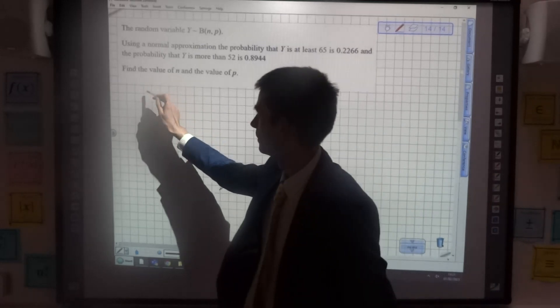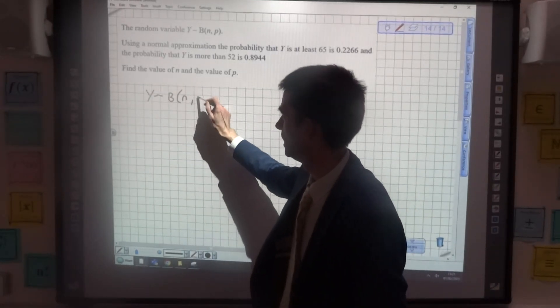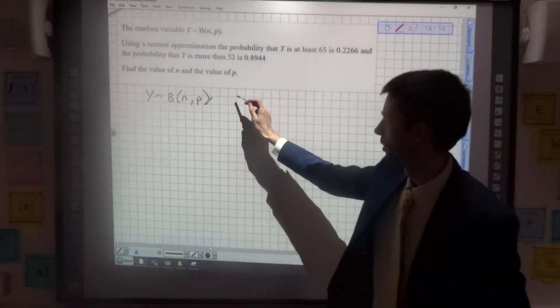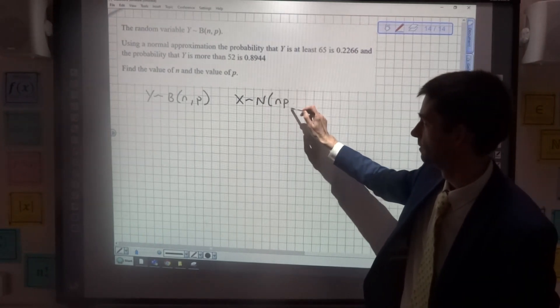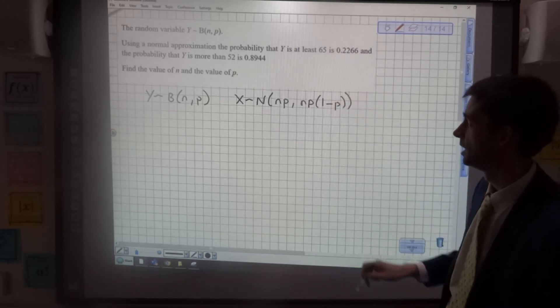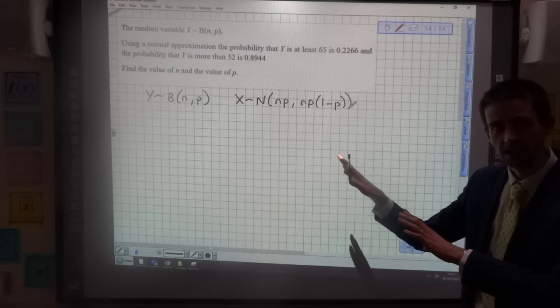So first up, we've got Y follows a binomial np. To do a normal approximation of that, which we'll call X, we would have had to use np for the mean, and then np(1 minus p) for the variance. So I'm just going to bank that knowledge for a bit later on, but that's what we're dealing with.